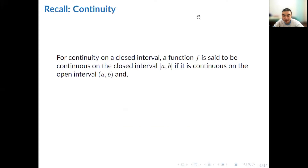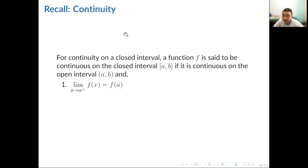For continuity on a closed interval, a function f is said to be continuous on the closed interval [a, b] if it is continuous on the open interval (a, b), and the limit of f of x as x approaches a from the right is equal to f of a, and the limit of f of x as x approaches b from the left is equal to f of b.